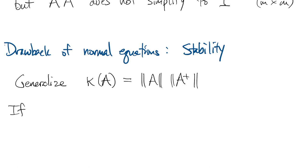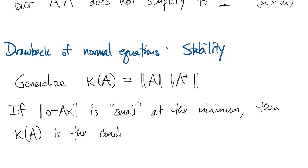Here's where it gets more complicated. If the residual that you get is small, so this is the thing we're trying to minimize, and if you're pretty successful at that, then this kappa of A is the condition number of the least squares problem.